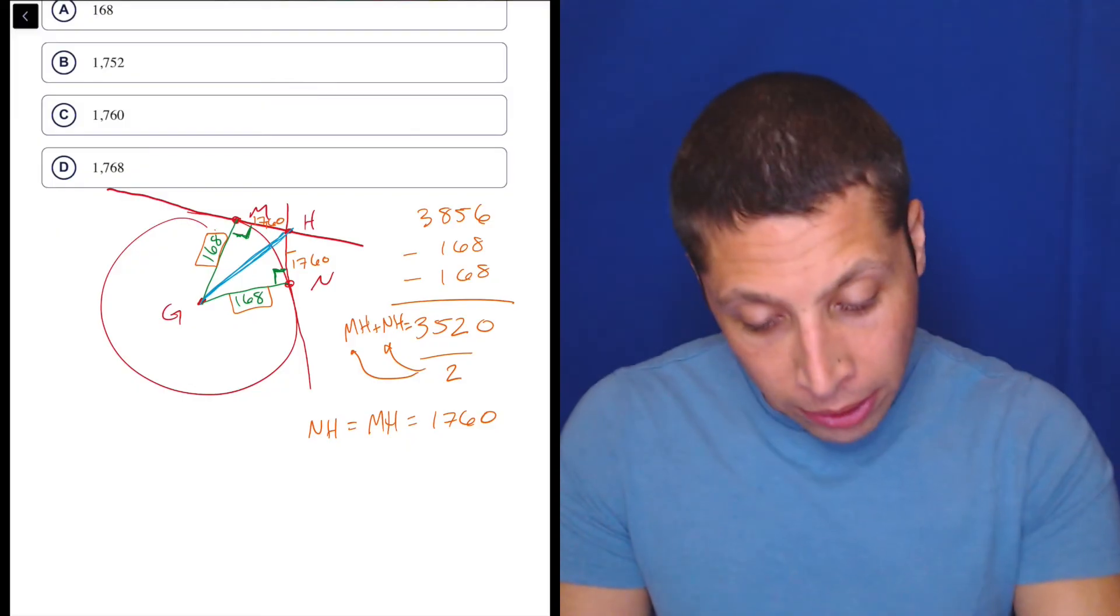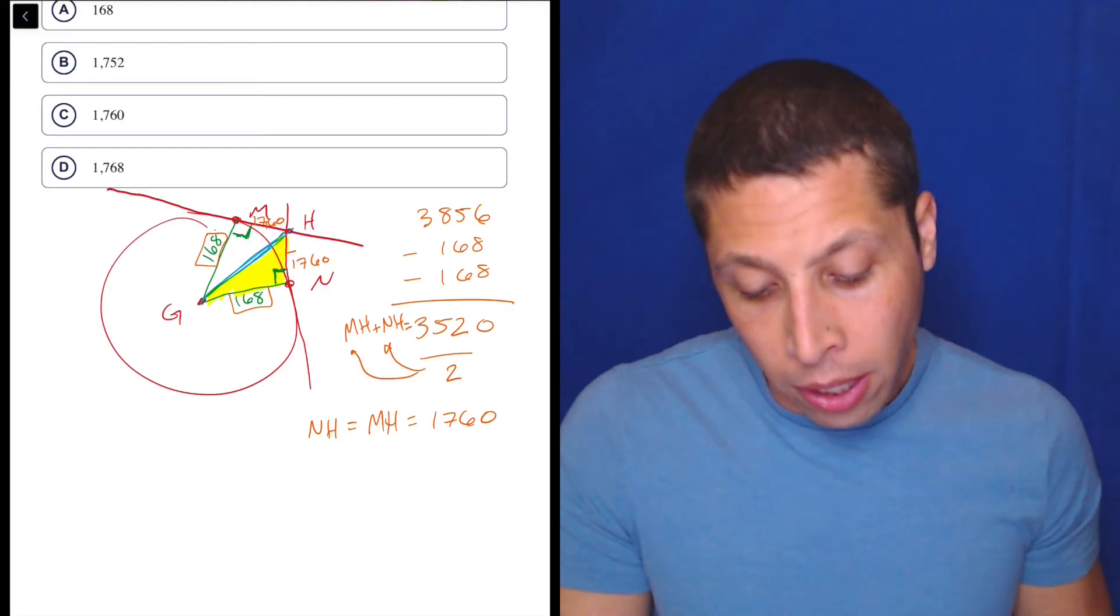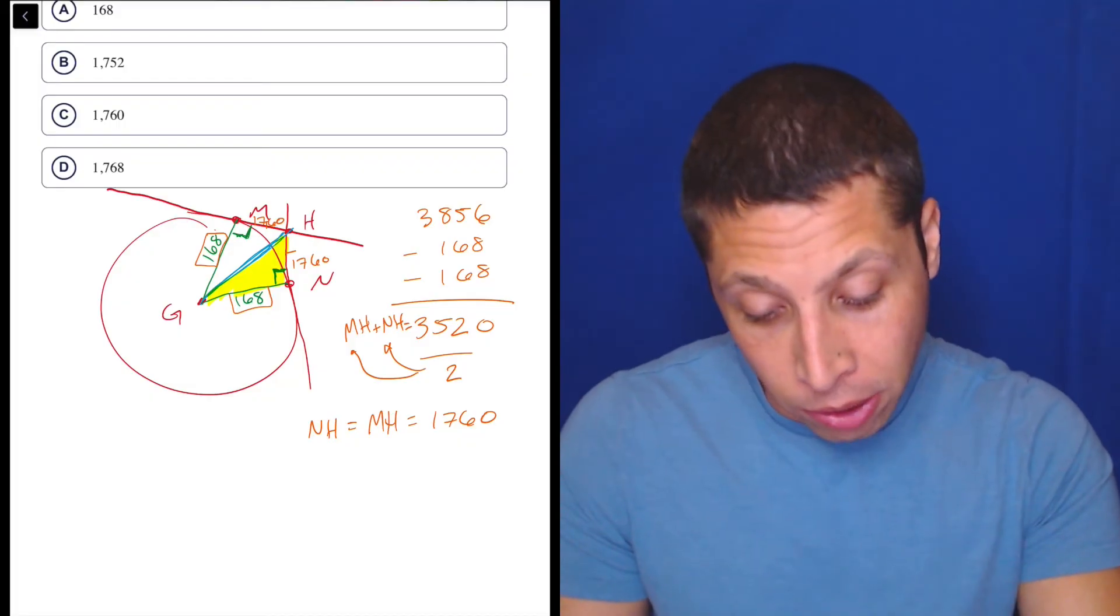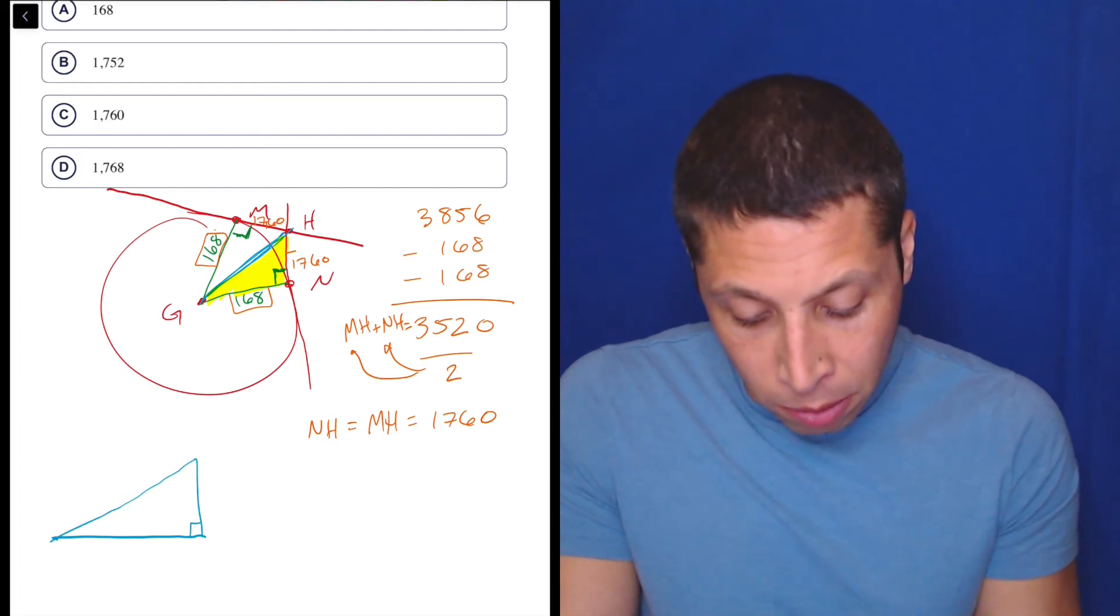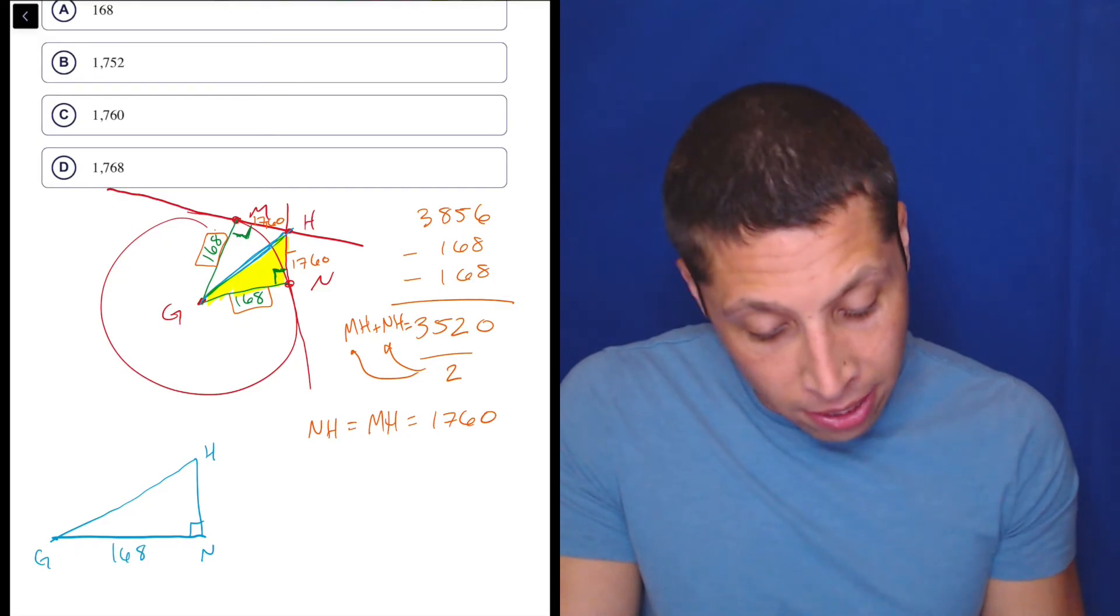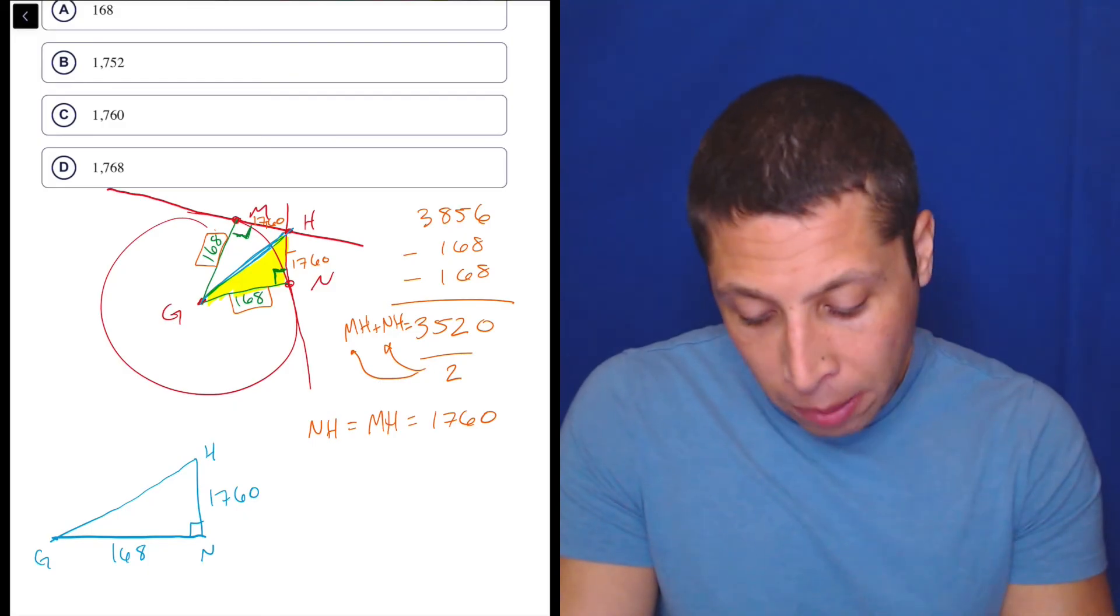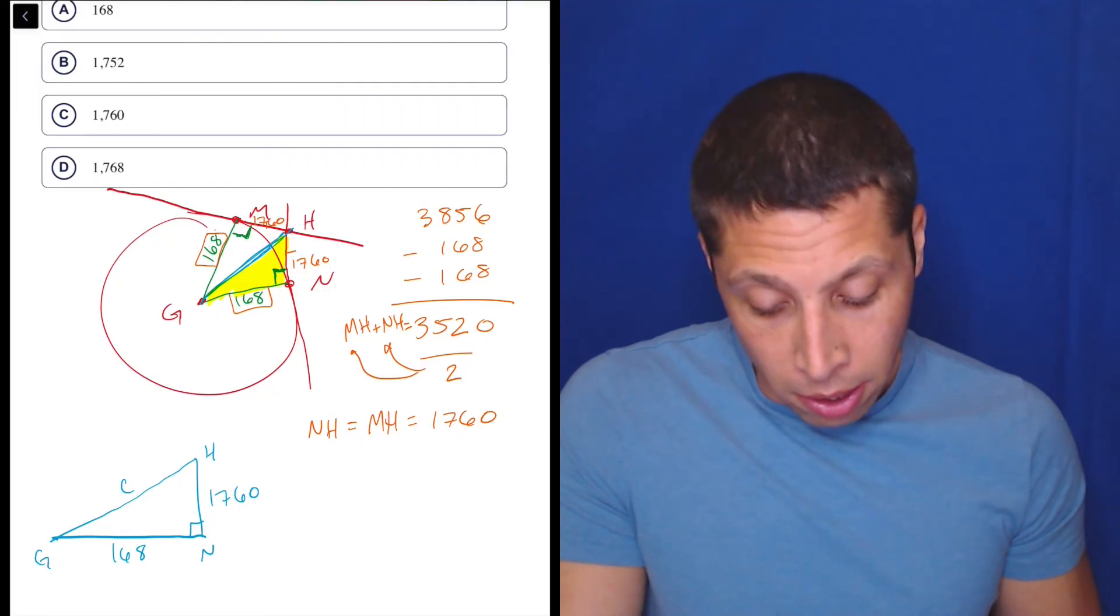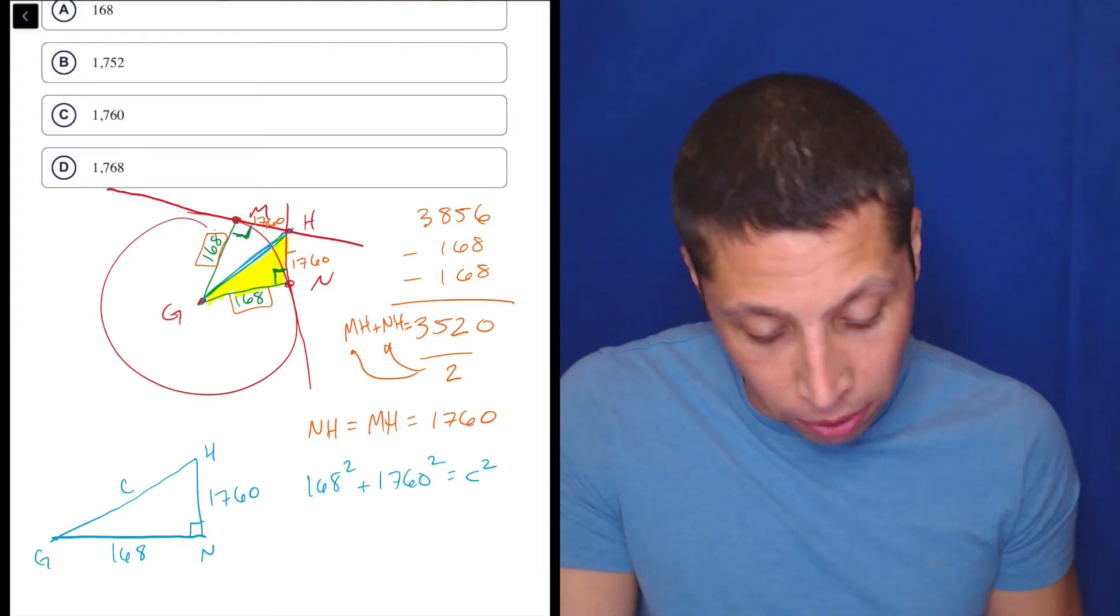But now I don't really care anymore. Now I am just interested in, let's just focus on the fact that one right triangle borders the two sides that I have plus the side that I want. So I'm going to pull this out. Let's just focus on that right triangle that I highlighted. So to draw it really neat, this would be N, this is H, this is G. We have sides of 168 and 1760, so not drawn to scale, but who cares.